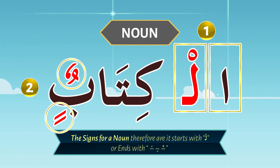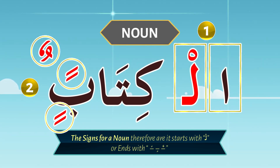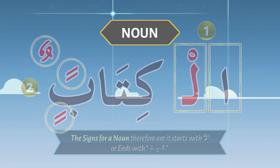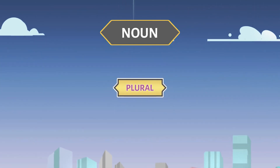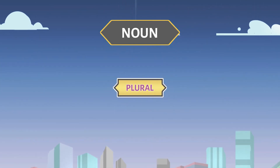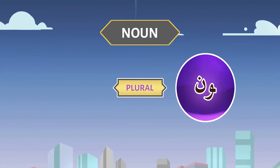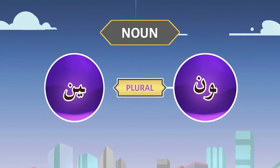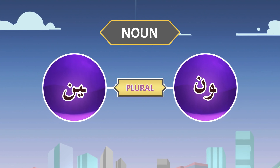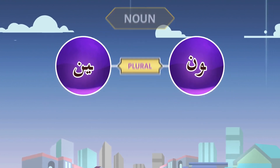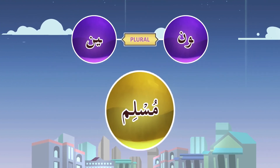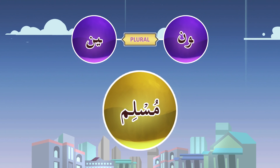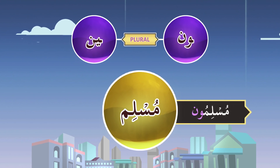In the last lesson we learned that a noun starts with 'ul' or ends with 'un' and 'in'. One of the ways to make plurals is to add 'un' or 'in' at the end. This is one way. So let us take the word 'Muslim' — the plural of 'Muslimun' is 'Muslimun'.